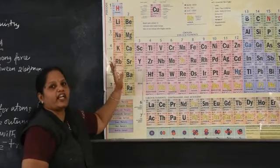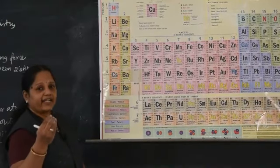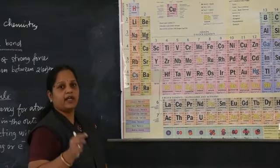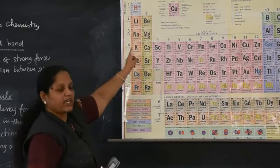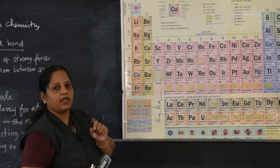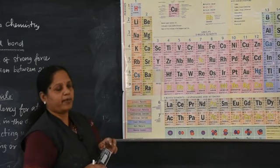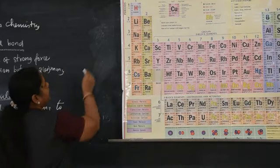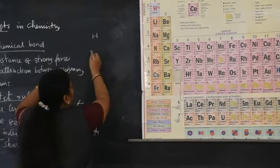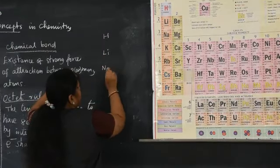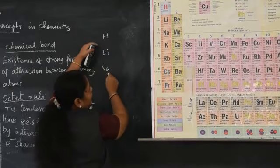When you write the electronic configuration for a given element, if the last electron enters into the S orbital, those elements are called S block elements. For example, in group 1: hydrogen, lithium, and sodium are the first three elements.